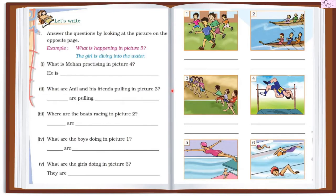Do you remember in the previous video of English we did this activity — 'Let's Write' — given on page number 42? In that activity we answered questions based on pictures. Some questions were given to us and we had to answer them based on these pictures. We have already done this, and now we are moving on to the next question of this activity.